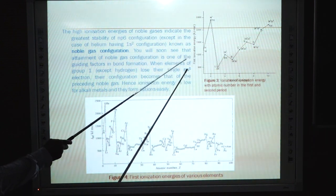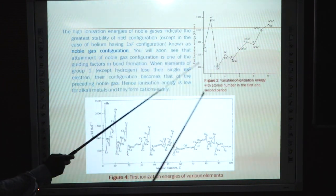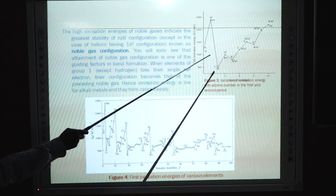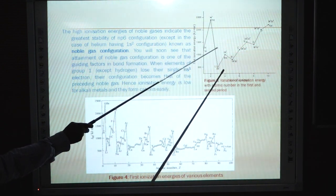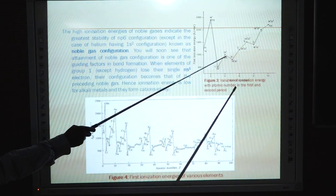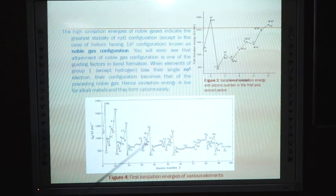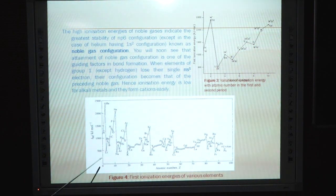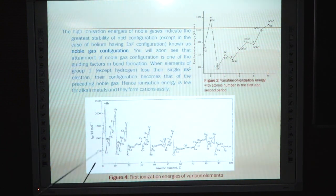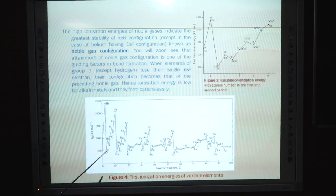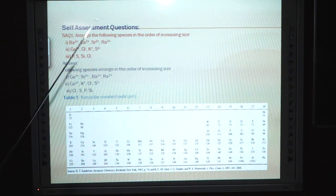In Figure 3, variation of ionization energy with atomic number for the first and second periods: hydrogen's first ionization energy increases to helium, then drops at lithium, increases through beryllium, boron, carbon, nitrogen; then oxygen's ionization energy decreases (due to half-filled 2p stability of nitrogen), fluorine increases, and neon is highest. In Figure 4, the first ionization energies of various elements show alkali metals — lithium, sodium, potassium — at the lowest values, while noble gases — helium, neon, argon, krypton, xenon — have the highest ionization energies.